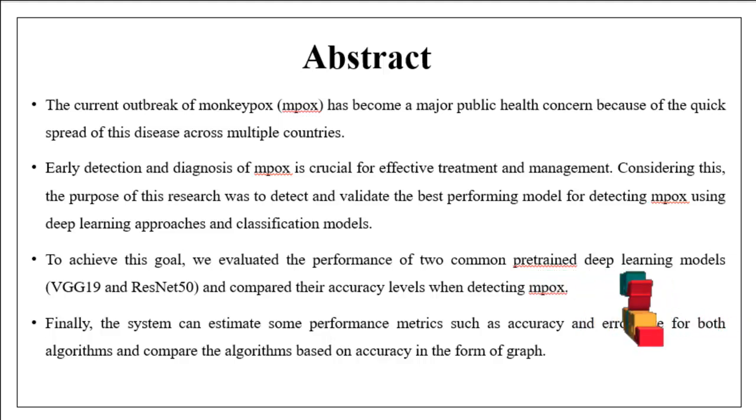Early detection and diagnosis of Monkey Box is crucial for effective treatment and management. The purpose of this project was to detect and validate the best performing model for detecting Monkey Box using deep learning approaches and classification models. To achieve this goal, we evaluated the performance of two commonly trained deep learning models such as VGG-19 and ResNet-50 and compare their accuracy levels when detecting Monkey Box.